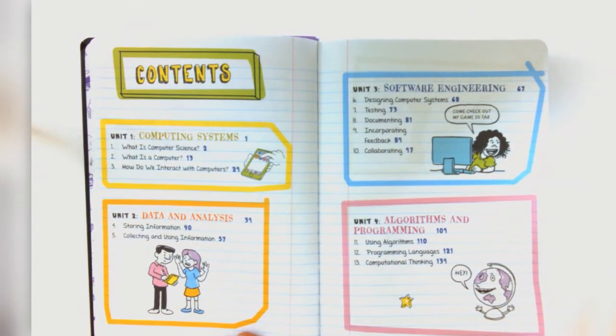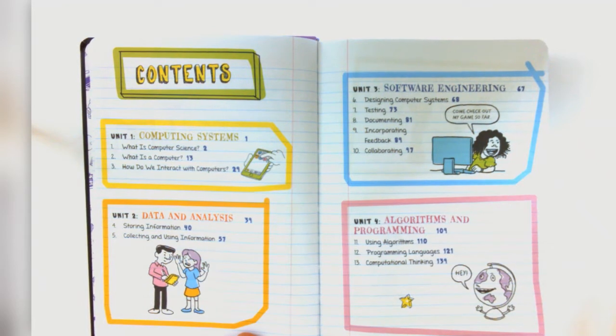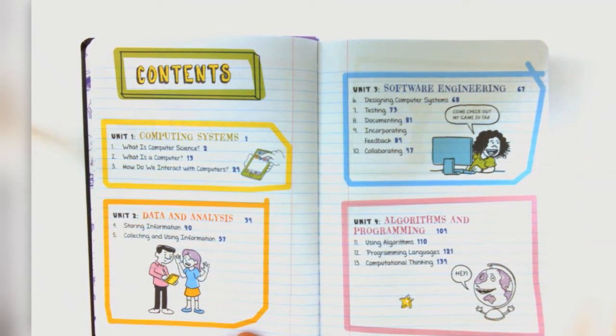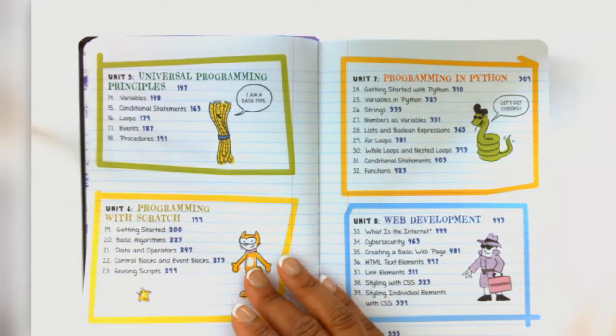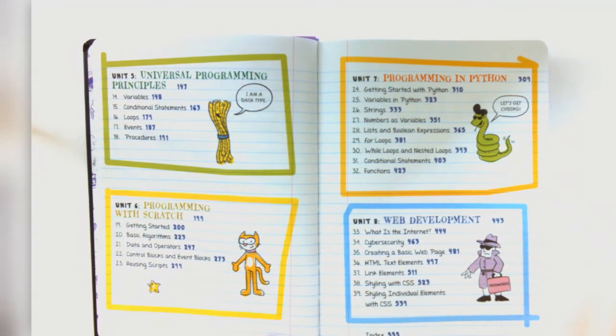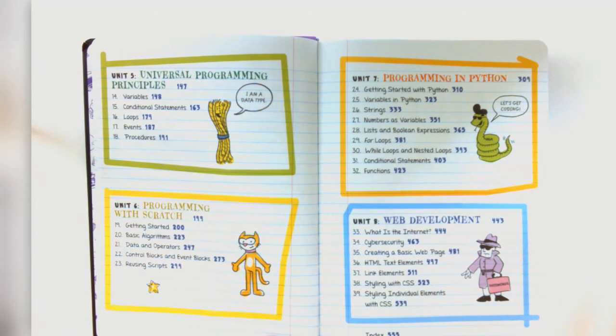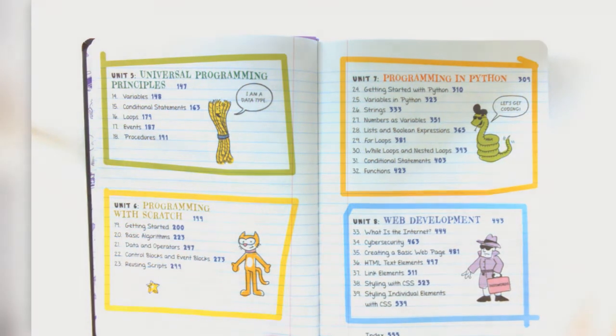We have the table of contents. Unit 1 computing systems. Unit 2 data and analysis. Unit 3 software engineering. Unit 4 algorithms and programming. Unit 5 universal programming principles. Unit 6 programming with Scratch. Unit 7 programming in Python. And Unit 8 web development.